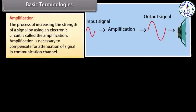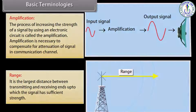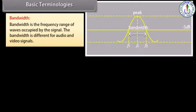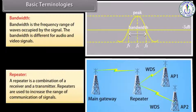Amplification: the process of increasing the strength of a signal by using an electronic circuit is called amplification. Amplification is necessary to compensate for attenuation of a signal in a communication channel. Range: it is the largest distance between transmitting and receiving ends up to which the signal has sufficient strength. Bandwidth: the frequency range of waves occupied by the signal. Repeater: a repeater is a combination of a receiver and a transmitter, used to increase the range of communication.